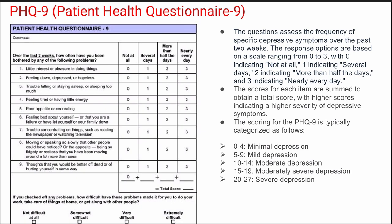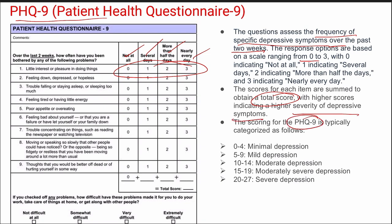Next is the Patient Health Questionnaire (PHQ-9), intended to assess the level of depression. It asks about the frequency of specific depressive symptoms over the past two weeks, with responses from 0 to 3: 0 being not at all, 1 being several days, 2 being more than half the days, and 3 being nearly every day. Scores are summed to obtain a total score ranging 0 to 27, categorized as minimal, mild, moderate, moderately severe, and severe depression.